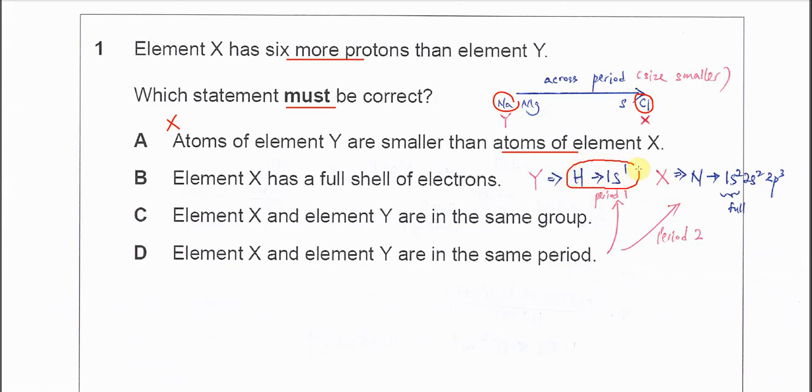Hydrogen has just one proton in the atom, so it's 1s1. If element Y is hydrogen and element X must be nitrogen. So it's 1s2, 2s2, 2p3.